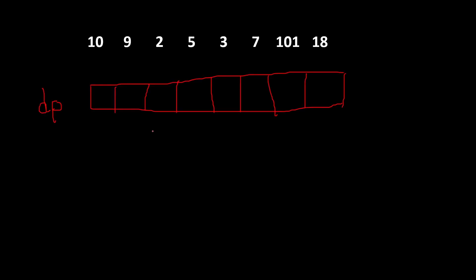We fill the initial base case: since the minimum longest length of a subsequence is each element itself, the minimum length is 1. So we fill all cells of the dp array with 1. Then we start applying the recurrence relation and gradually solve each sub-problem to solve the whole problem.